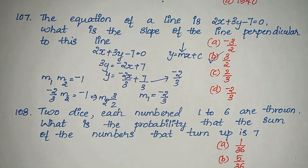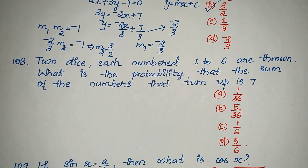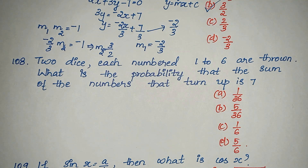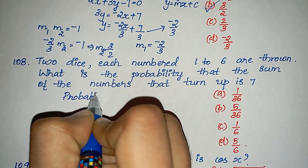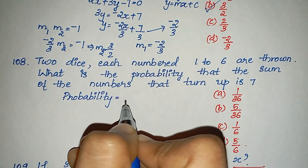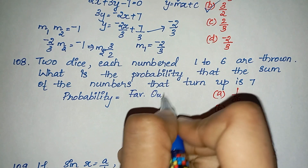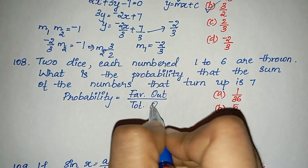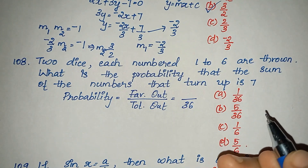Question 108: two dice, each numbered 1 to 6, are rolled. What is the probability that the sum of the numbers that turn up is 7? The formula is favorable outcomes divided by total outcomes. There are 36 total outcomes.